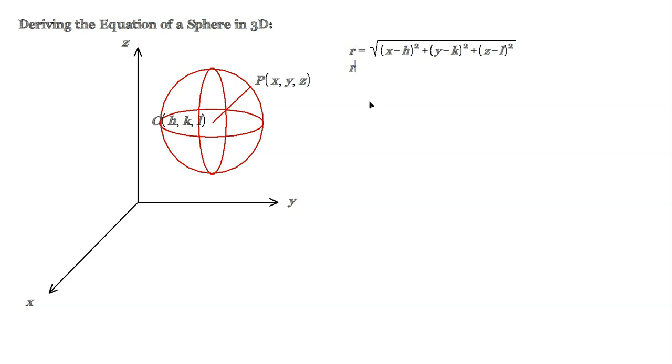Then you square both sides, so r² would be equal to basically this expression right here—everything under the root symbol, because squaring the right side would make the square root symbol go away. So r² = (x - h)² + (y - k)² + (z - l)².